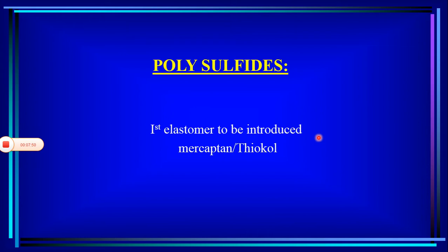Polysulfides are one of the oldest elastomeric impression materials. This material was first invented in dentistry when there was a scarcity of hydrocolloids — that is, alginate or agar-agar material — after World War II. So to cope with the shortage of hydrocolloids, this polysulfide material was invented.